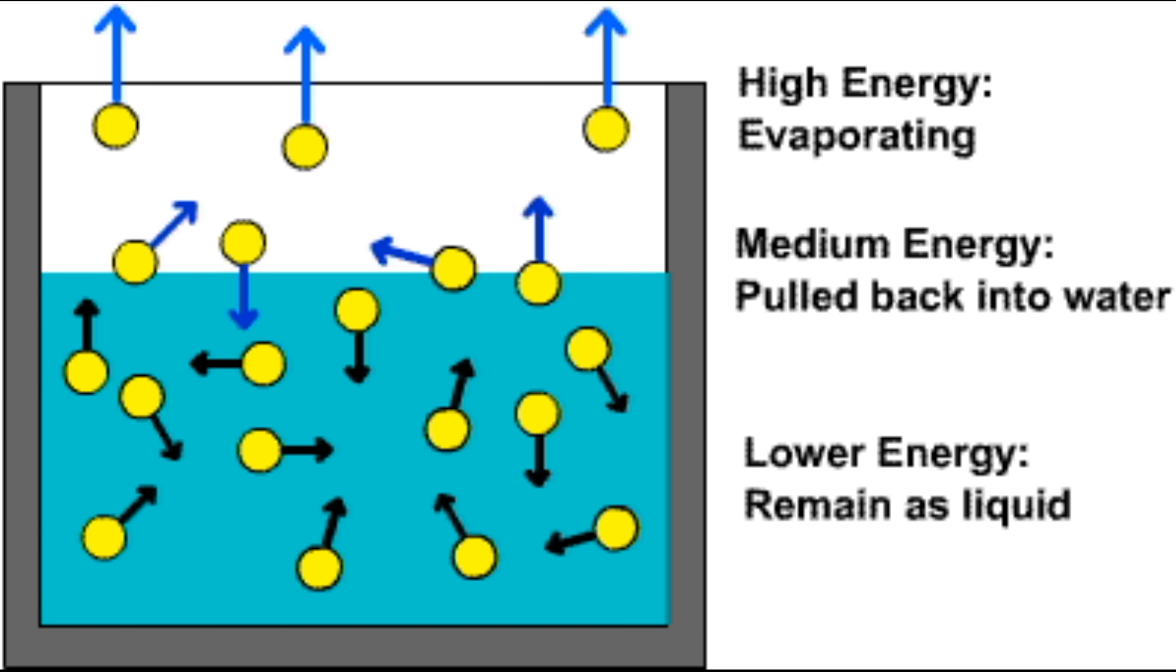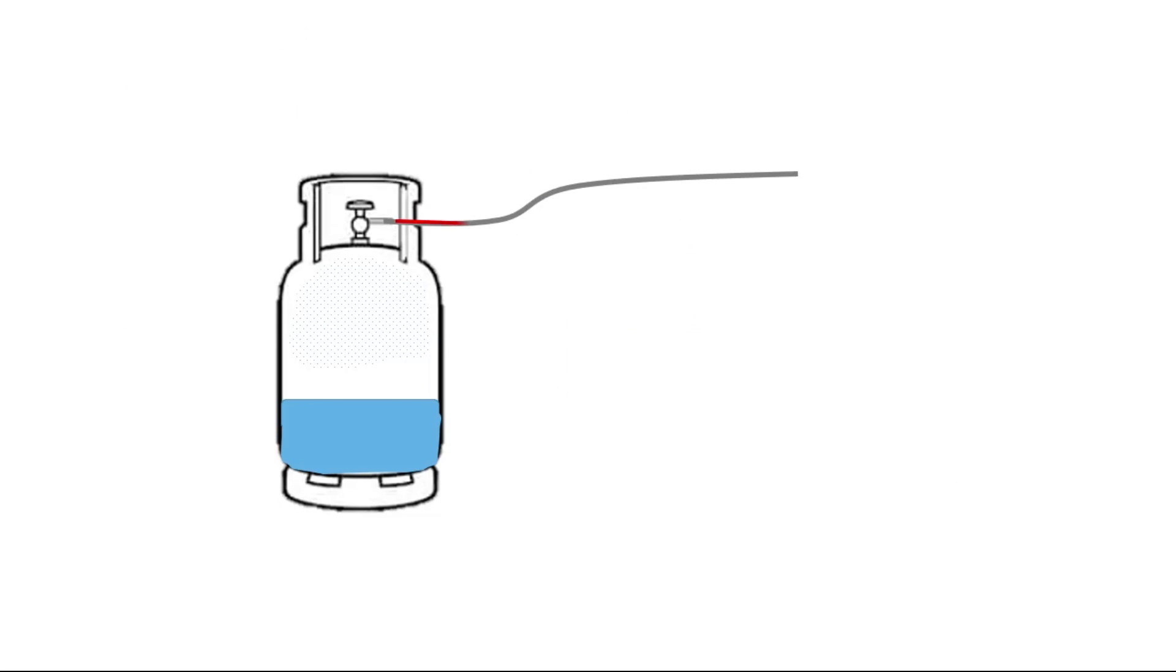Now let's go back to our example. The gas is being used rapidly, so the phase change is occurring continuously, which maintains a low temperature.